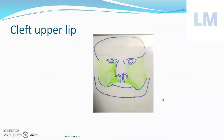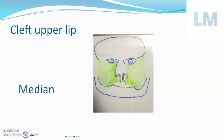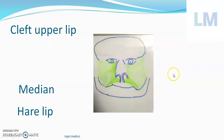Now we come to congenital anomalies of the lips. First is cleft in the upper lip — a median cleft lip. You can see a gap exactly in the midline. This happens because of the failure of fusion of the medial nasal process of one side with the medial nasal process of the other side. Since this is common in hares or rabbits, it is also called harelip. The cause is failure of fusion of the two medial nasal processes.